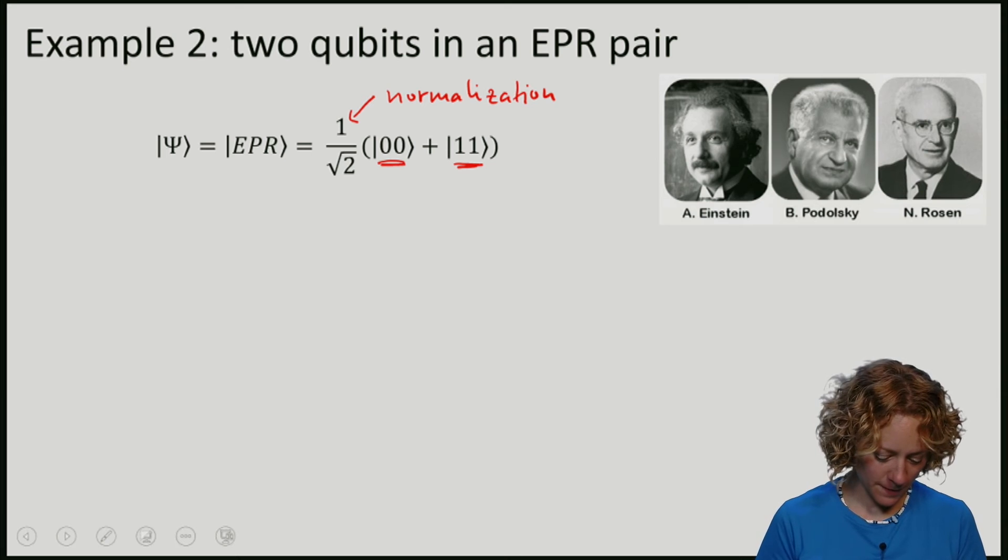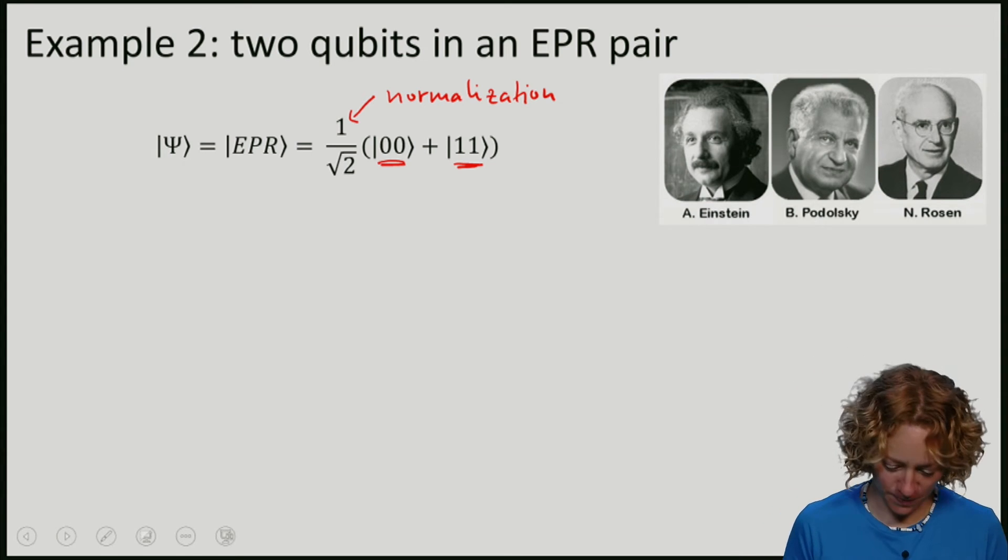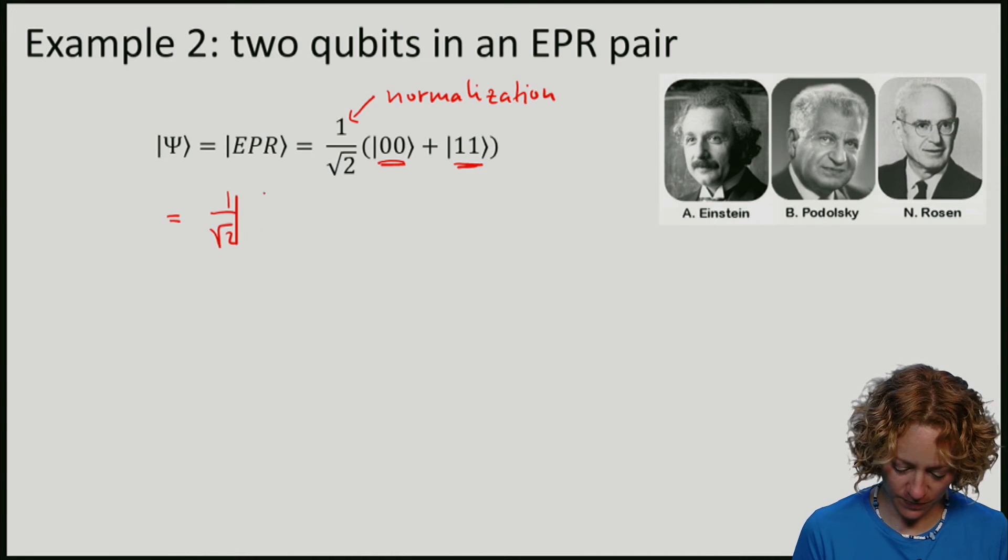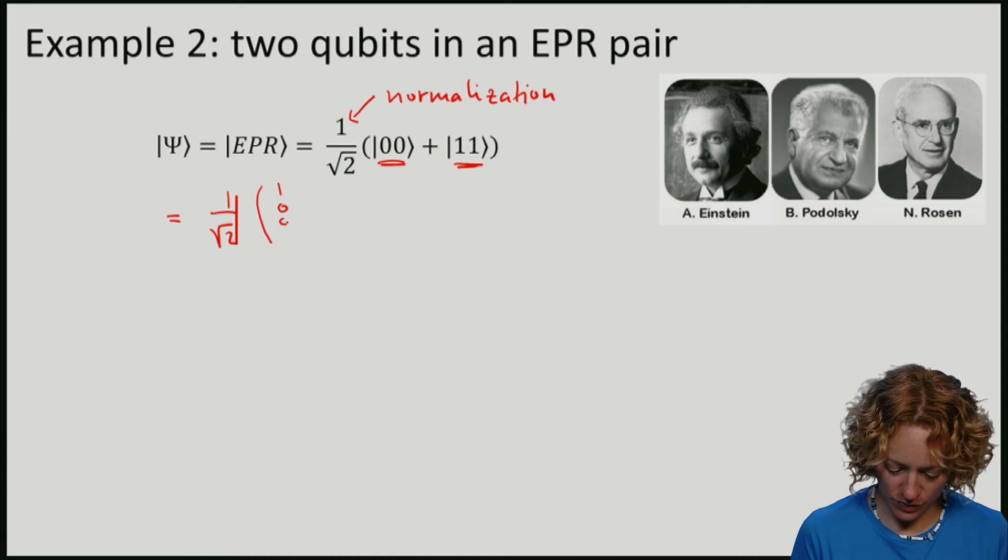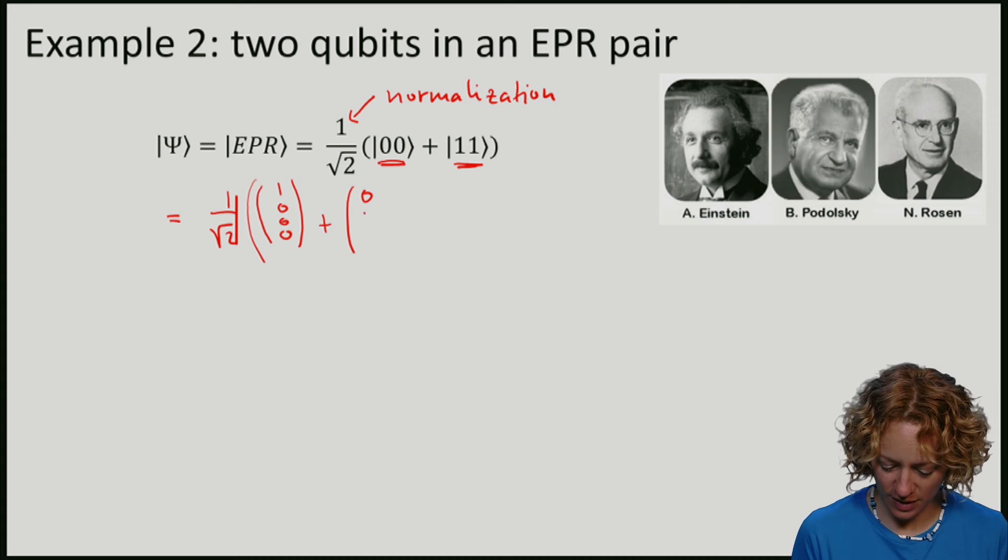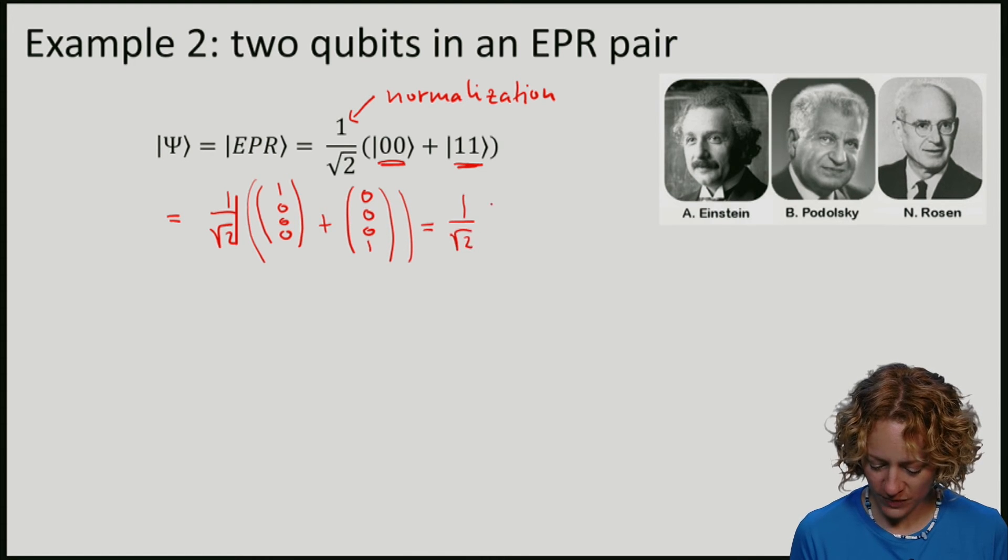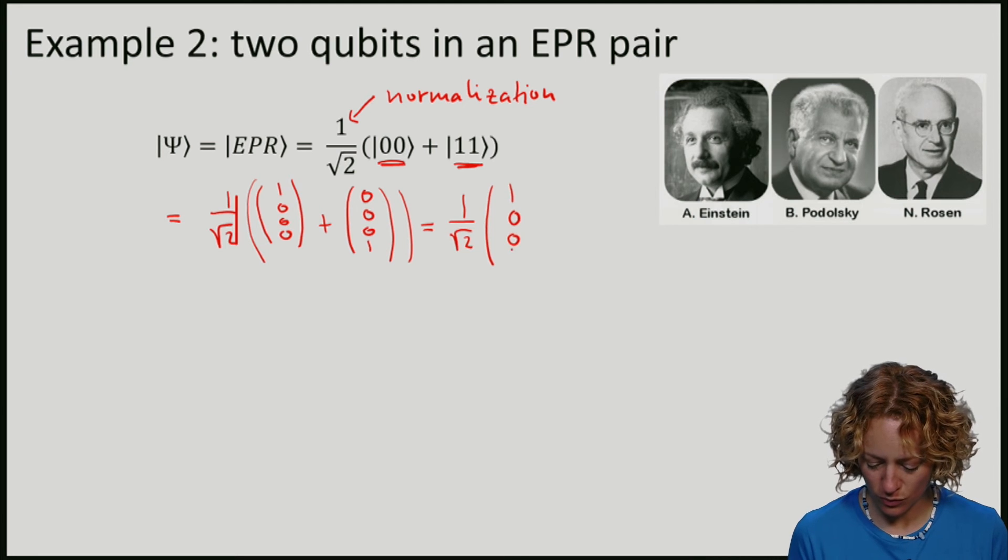So again, if I write this as a vector, I have 1 over square root 2. From the 00, 0,0,0. From 11, remember there we had just a 1 at the end. I get 0 everywhere except at the last position. And if I sum them all up, I have 1 over square root 2 times 1,0,0,1.